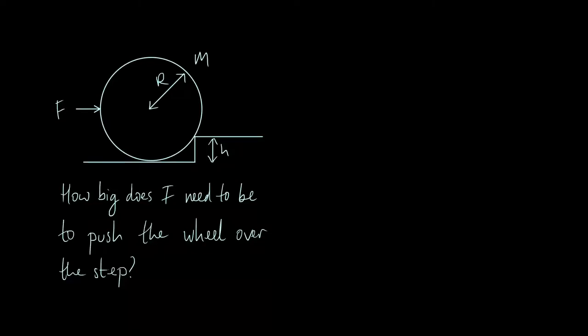Hello everyone. In this video we're going to look at what I thought was quite an interesting mechanics problem. What we've got is a wheel of radius r — it would work equally with a board or a sphere, but we're going to think of it as a wheel. Radius r has a mass of m, and it's encountered a step of height h, and what we're doing is applying a horizontal force of magnitude F acting at the midpoint of the wheel, so it's going through the centre of mass. We want to know how big a force we have to apply in order for this wheel to actually go over the step.